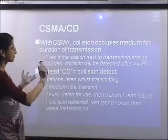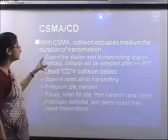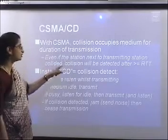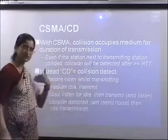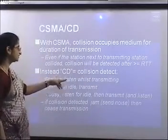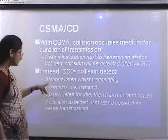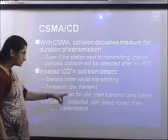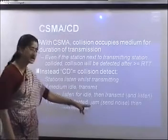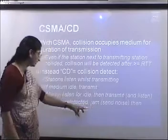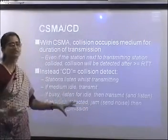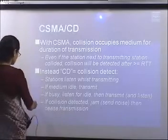Comparing CSMA and CSMA/CD: with plain CSMA, a collision occupies the medium for the full transmission duration — detected only after a round-trip time. With CSMA/CD, stations listen while transmitting. If idle they transmit; if busy they wait for idle then transmit; if collision detected, they send a jamming signal (noise) to inform all nodes that a collision occurred, then stop transmission.